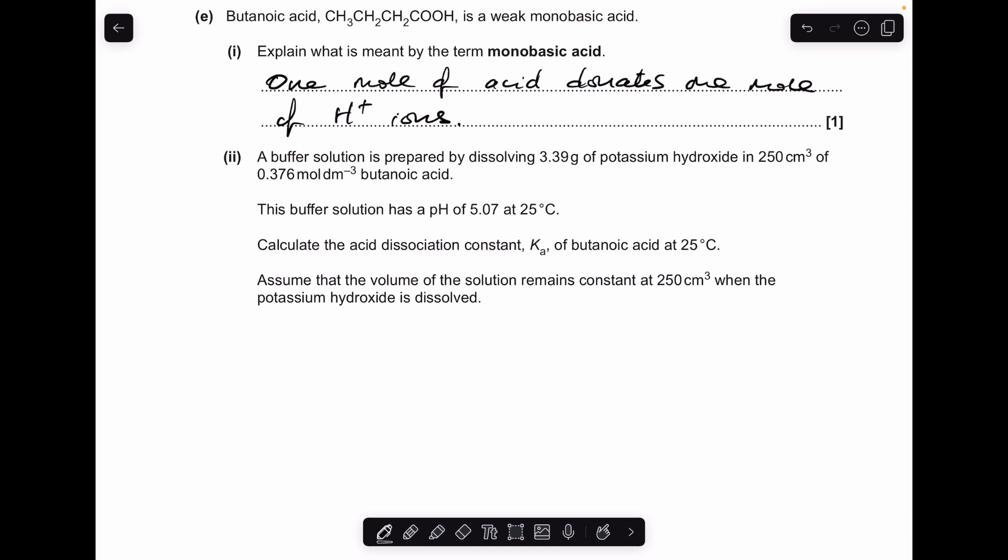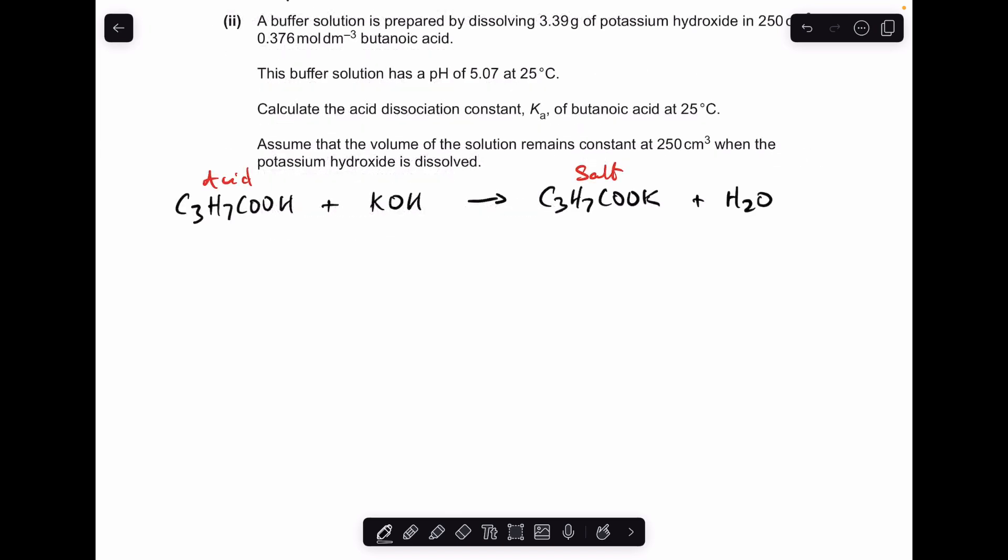Okay, so we'll make a start. There's the explanation for a monobasic acid, so one mole of the acid donates one mole of H⁺ ions. Moving on to the calculation, I would always recommend starting with the chemical equation for the reaction. In this case we've got butanoic acid with potassium hydroxide and that's going to make the salt potassium butanoate and water.